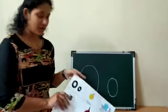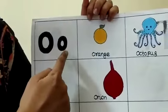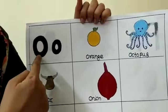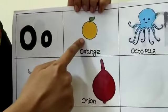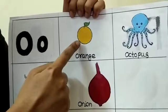Now look at here. Capital O, small o. Capital O, small o. O for orange. O for orange.